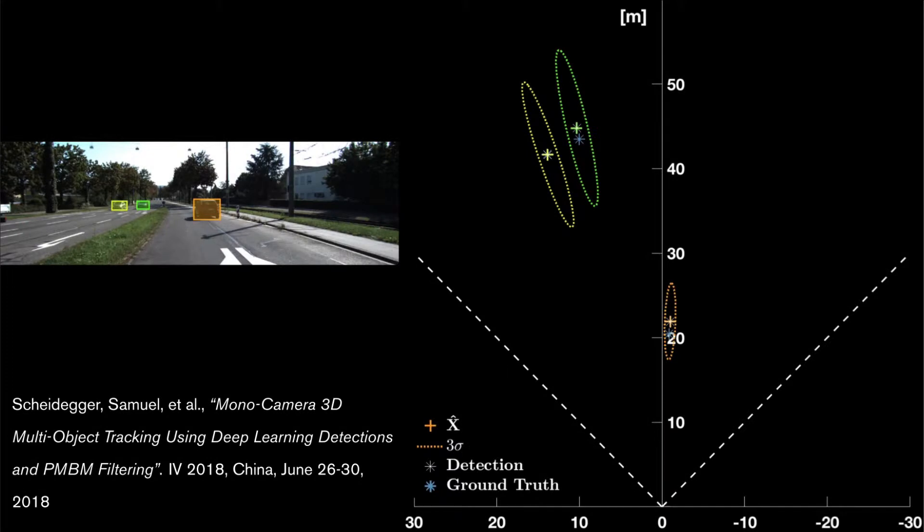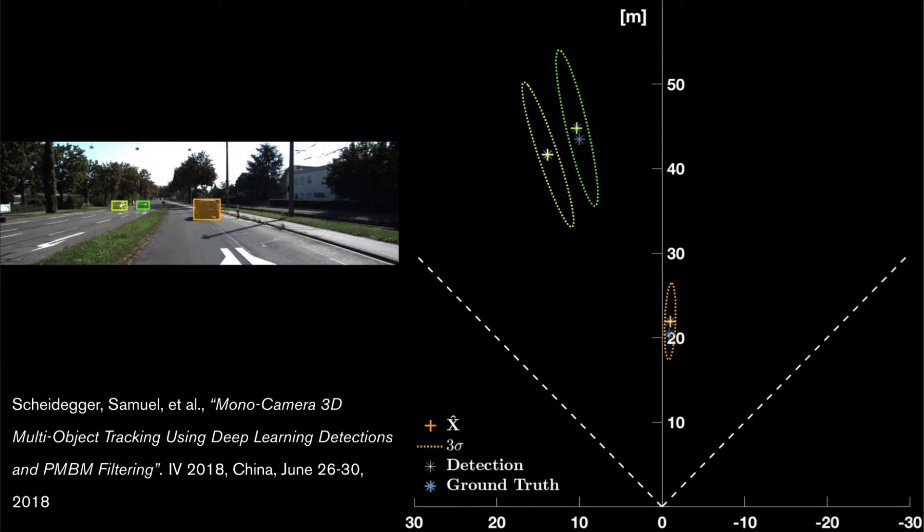This first example concerns tracking vehicles using observations from a monocamera and comes from this paper by Samuel Scheidegger in 2018. The aim is to estimate the 3D position and velocity of vehicles from a sequence of images, much in the same way as we did in our previous illustration, but with actual camera observations.